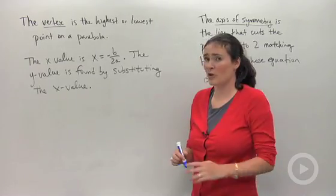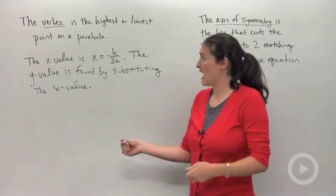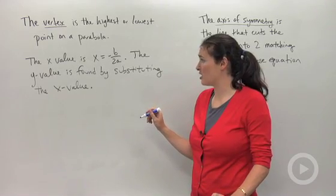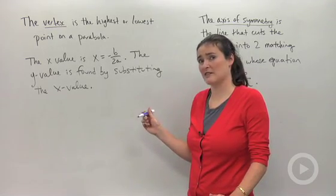The vertex is the highest or lowest point on a parabola. The x-value is x equals negative b over 2a. The y-value is found by substituting the x-value.